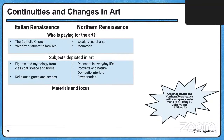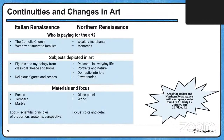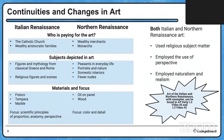Looking at materials and focus: in Italy we have fresco paints, tempera paints, and marble — which is plentiful there. Moving North, marble is not plentiful, so we see other mediums: oil, panel, and wood. There's also a shift from a focus on scientific principles like proportion, anatomy, and perspective, to a focus on color and detail. However, there are continuities: both Italian and Northern Renaissance art use religious subject matter, employ perspective, and use naturalism and realism.